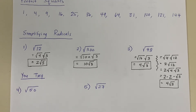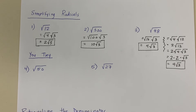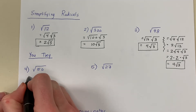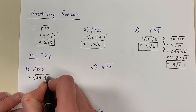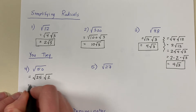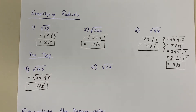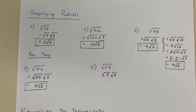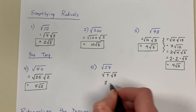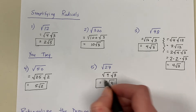I would like for you to pause the video and try number 4 and 5. When you're finished, hit play and I will go through these with you. Problem number 4, I have the square root of 50. The largest perfect square that divides into 50 is 25. So I'm going to rewrite the square root of 50 as the square root of 25 times the square root of 2. The square root of 25 is 5, so this is 5 radical 2. And number 5, the largest perfect square that divides into 27 is 9. So I'm going to rewrite this as the square root of 9 times the square root of 3 — 9 times 3 is 27. The square root of 9 is 3. Remember, when you take the square root, the square root symbol goes away. But I cannot simplify the square root of 3, so I keep it: the square root of 27 is 3 radical 3.